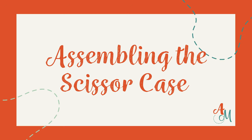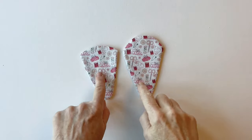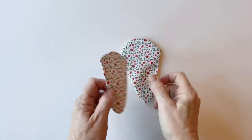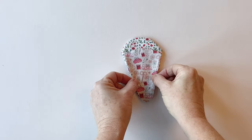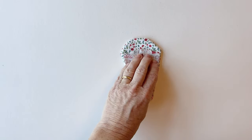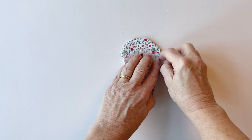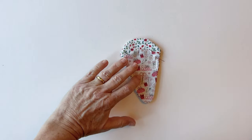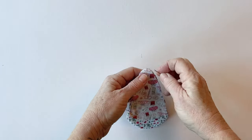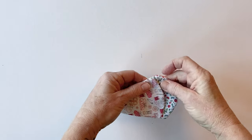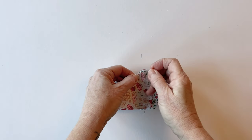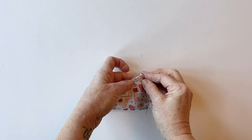Assembling the scissor case. Place the case front on top of the case back so that the lining sides are facing. You've got the outer sides on the outer edges, and the lining sides are facing. Match up the bottom curved edge and the side edges. The case back is bigger than the case front, but the bottom pointed curved edge and sides need to match up. Pin it together.